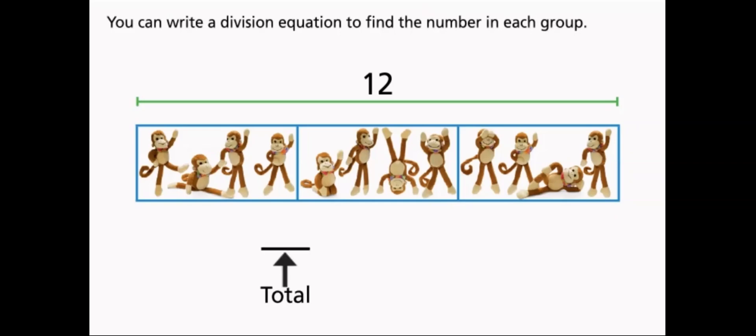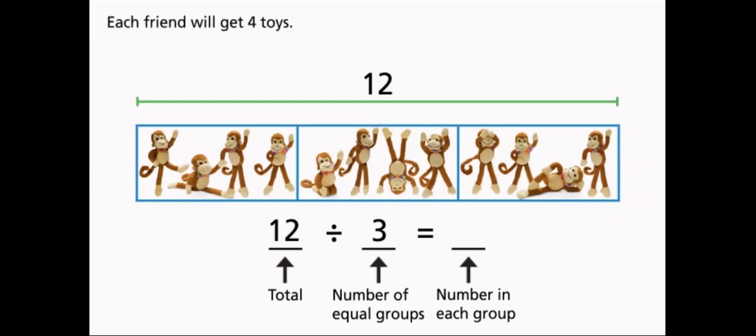You can write a division equation to find the number in each group. Each friend will get four toys.